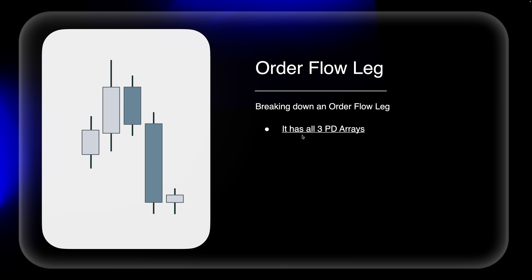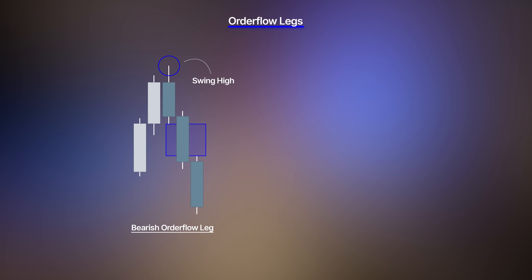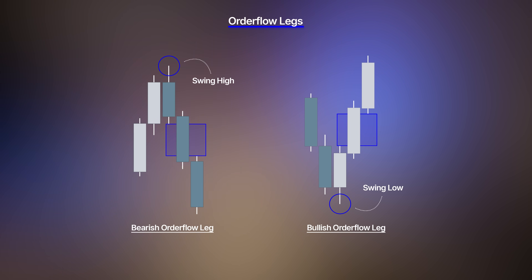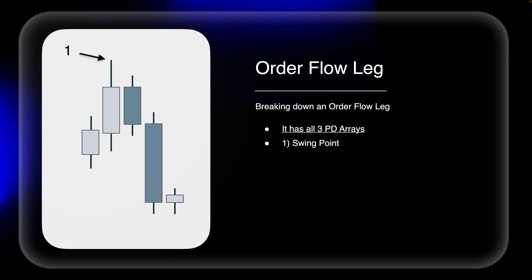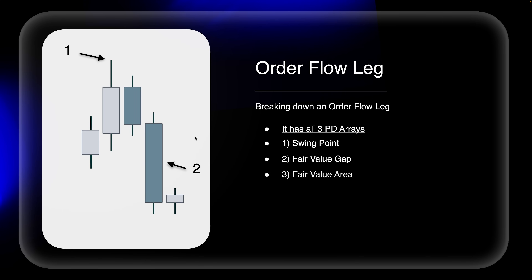Breaking down the order flow lag: it contains all three PD arrays. Number one, a swing point at the top — that is what makes it a lag. A lag in price action is when we have a swing high followed by a fair value gap, or a swing low followed by a fair value gap. This is a bearish order flow lag. After that swing point we want also a fair value gap, and then an order flow lag also includes a fair value area — the retracement up into the offering of fair value, leaving behind that fair value area.